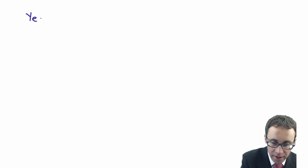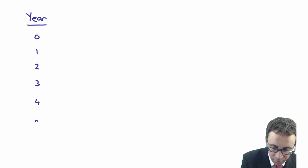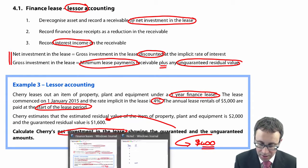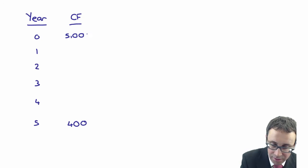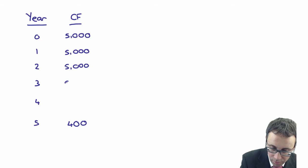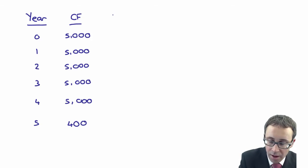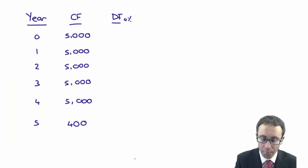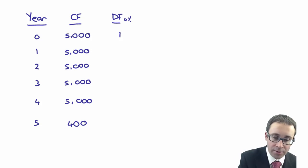There's a lot to consider, so let's go through it. Looking at the years: T0, one, two, three, four, five. The unguaranteed residual value is $400 at T5, and the lease payments of $5,000 are made in advance from T0 through T4. The discount factor is 4%. At T0 it is 1. To work out a discount factor remember it's 1 over (1 + R) to the power of N. So at T1 it's 1 divided by 1.04, giving 0.962.